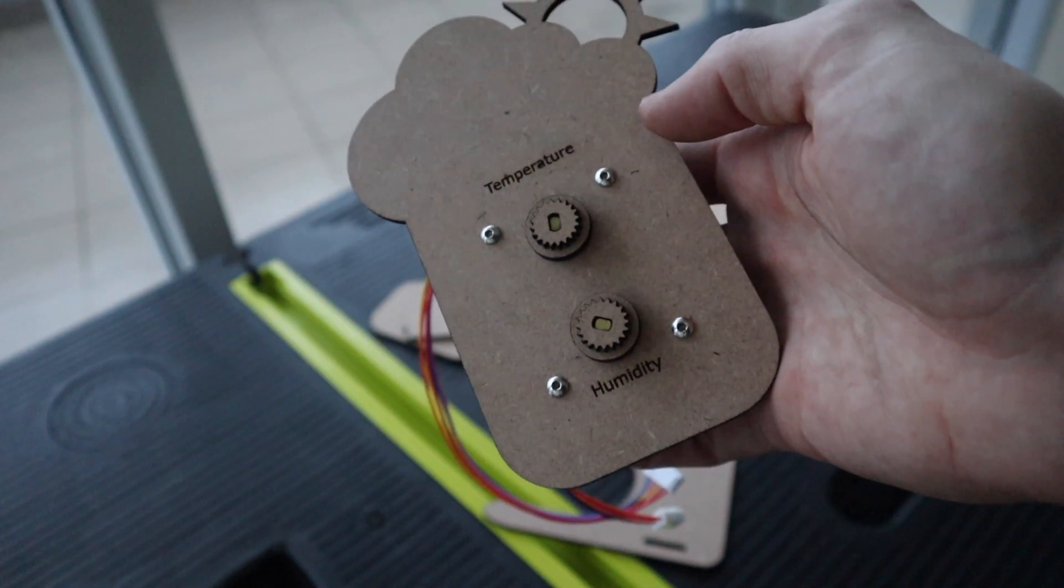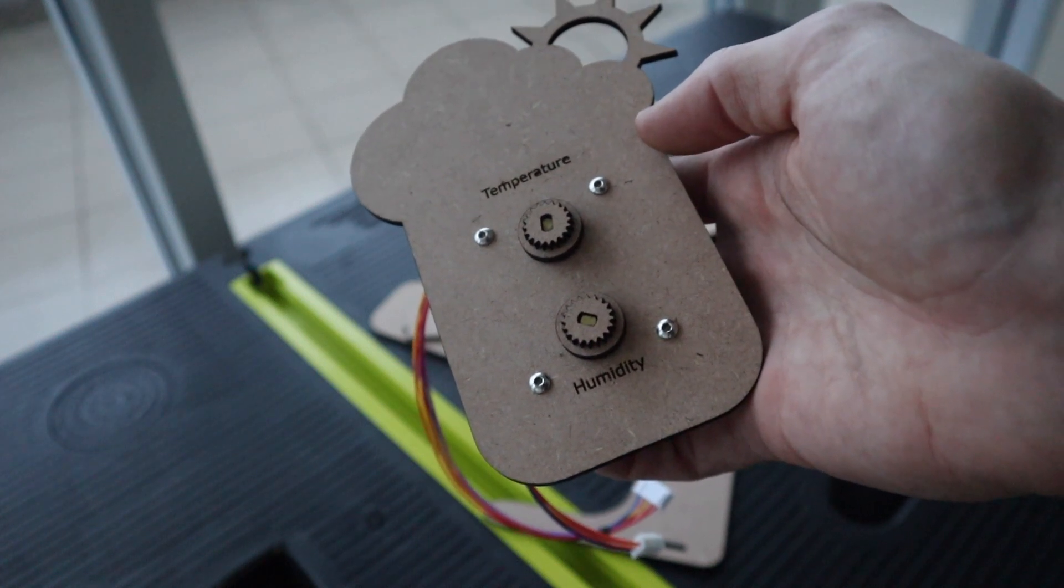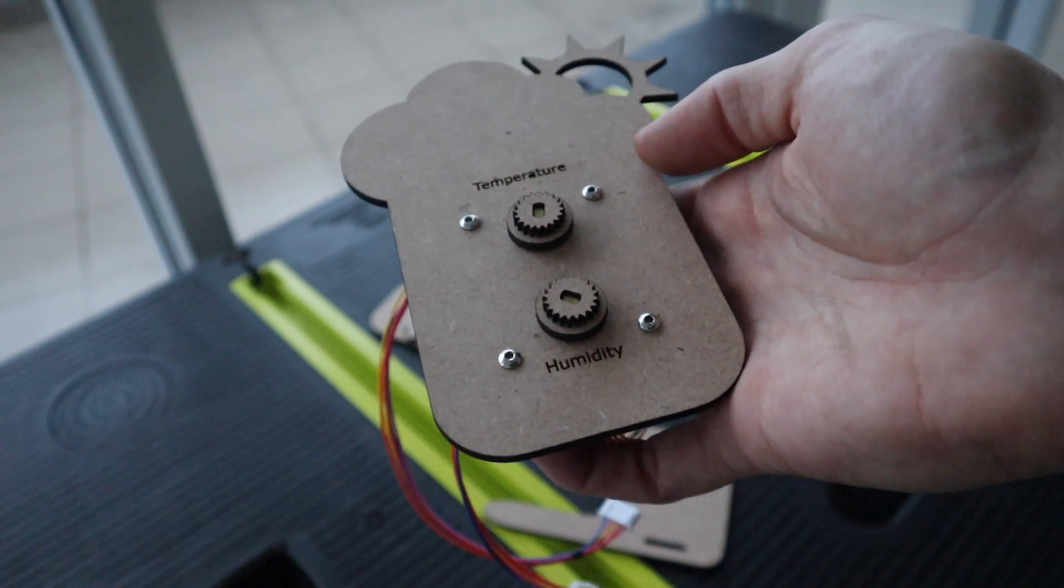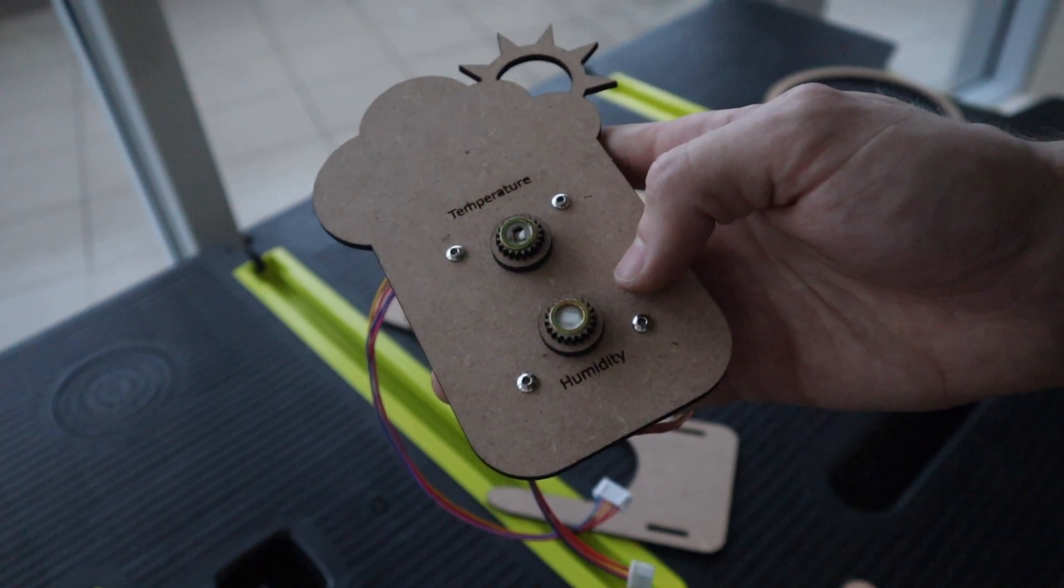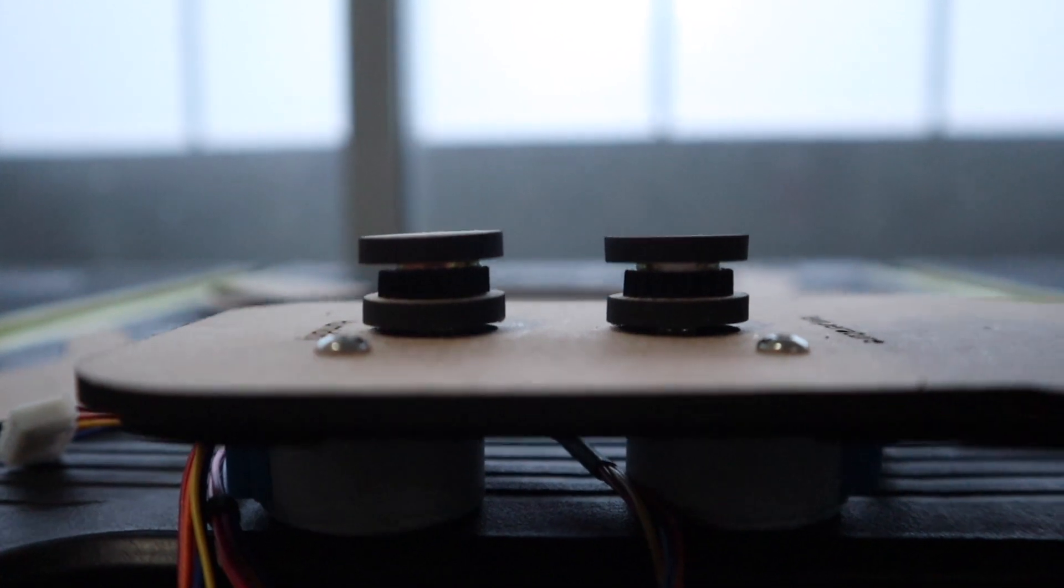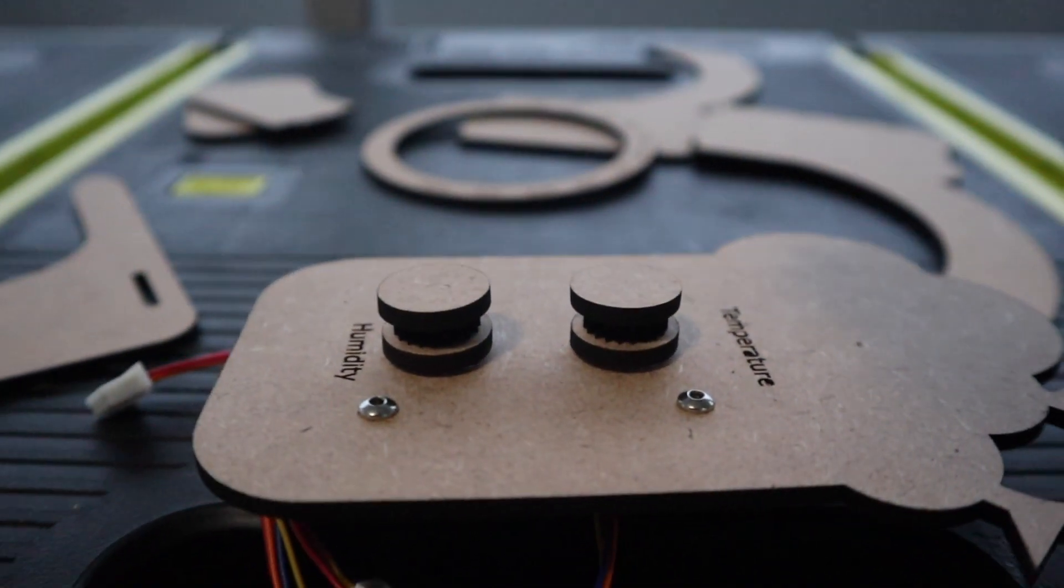Next, stack your gear pieces onto your servos with a drop of wood glue between each. Start with a disc with a hole in it and then the gear. You'll then need to add a small spacer between the gear and the front disc to create a bit of room for the gears to move freely. I used a flat washer for each of these.